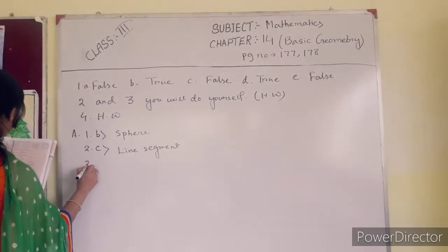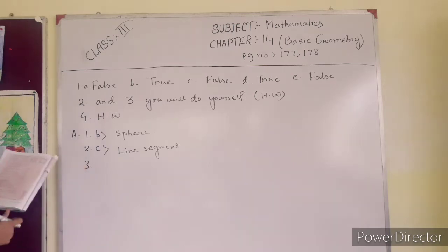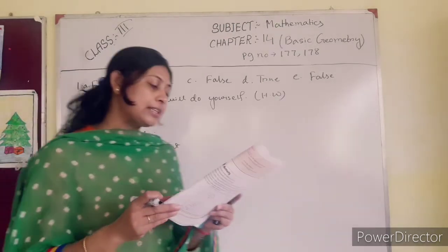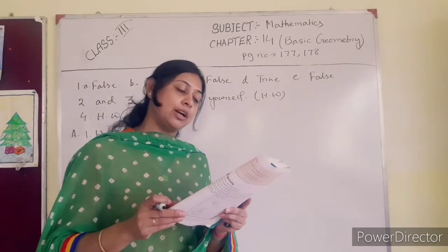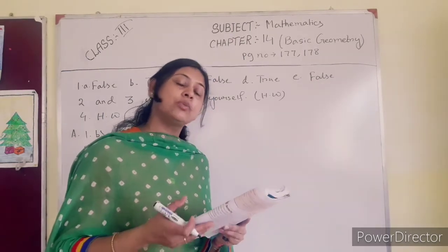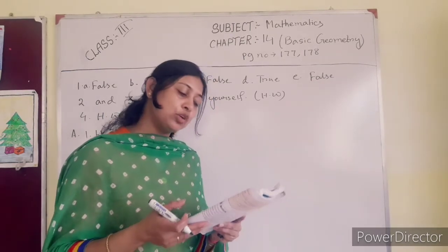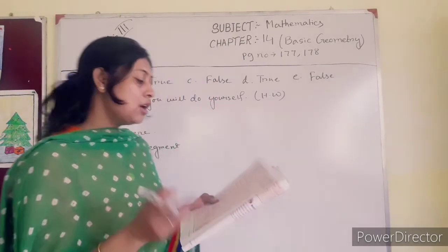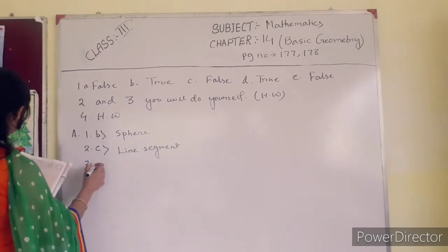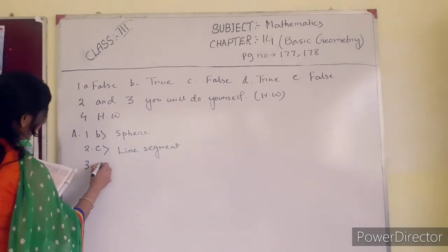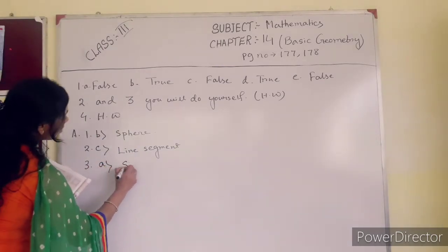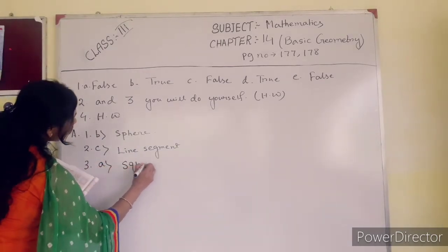Number 3: which of the following is not a 3D shape — a square, a cone, or a cylinder? Cone and cylinder are solid 3D shapes. A square is only a plane shape, so the correct answer is A: square.